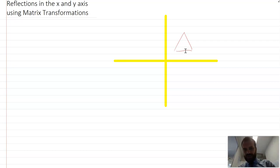We're going to reflect it in the x axis like that, or we're going to reflect it in the y axis like that. So if this was a, b, and c,